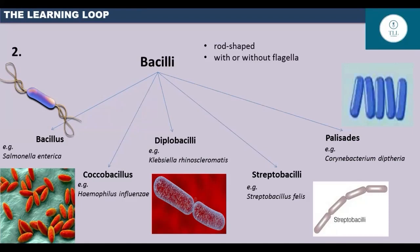Then the next type of bacilli is the palisades. This arrangement looks like a fence-like structure. Example, Corynebacterium diphtheriae. It causes diphtheria in humans.